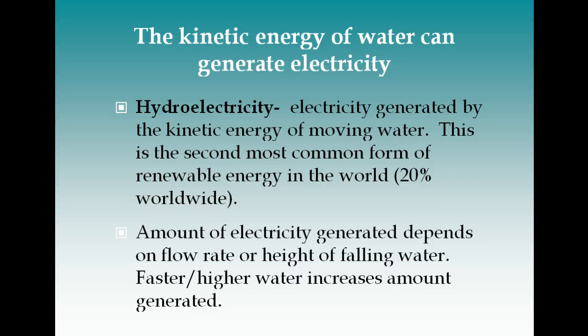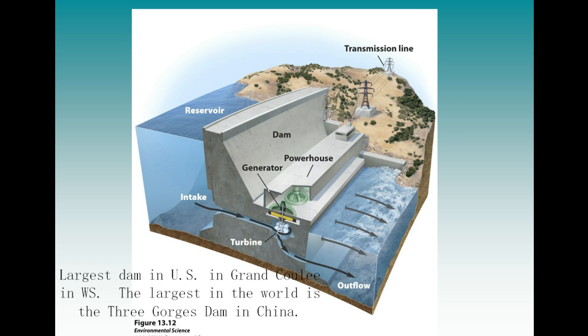Hydroelectricity is electricity generated by the kinetic energy of moving water and is the second most common form of renewable energy in the world, with biomass being number one. It works like a coal or nuclear power plant except you're not burning any fuel. Free-flowing water falling over a dam gains kinetic energy — the higher it falls, the greater the potential energy and therefore the greater the kinetic energy. The flow rate and the height of the dam increase how much electricity you get. The largest dam in the US is the Grand Coulee Dam in Washington State, and the largest in the world is the Three Gorges Dam in China.